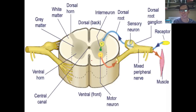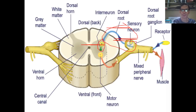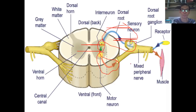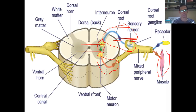Looking at other diagrams, the interneuron in your spinal cord is connected to both the sensory neuron and the motor neuron. Technically, these three neurons work hand-in-hand together to relay messages from the sensory input, then deliver output to a certain muscle or effector. That is how your spinal cord works.